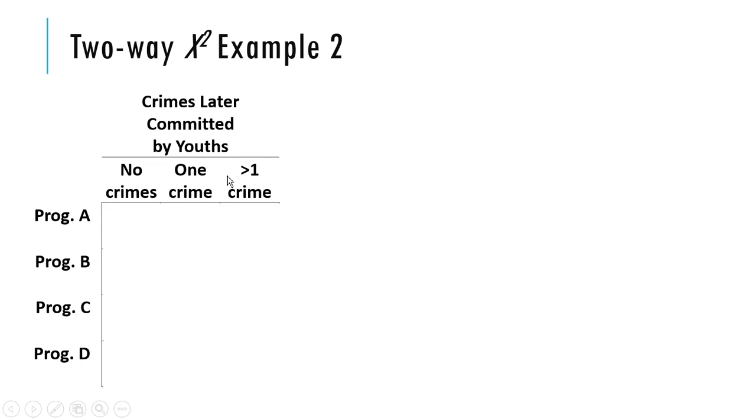You can't do that because of this little guy right here, greater than one crime. That's an open-ended category. That person could have committed two crimes, three crimes, or 500 crimes, and there's no way to tell. So this is no longer a numerical variable, it's an ordered categorical variable. We have to use categorical data analysis techniques like this chi-squared independence test.